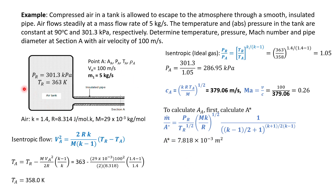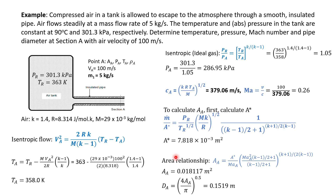We imagine a hypothetical nozzle that has sonic velocity equal to that at point A and exactly the same mass flow rate. Using this Mach number value, we find the imaginary critical area A*. Then using the area ratio of section A to the critical area, we calculate the actual area at section A and finally compute the diameter at point A from that area.